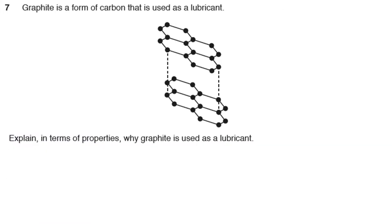The second part of the question: I think we only need about a couple of marks for this, maybe two. So explain in terms of properties why graphite is used as a lubricant. So back to the margin, back to the scrap paper. What do you know? What can you see on that diagram?